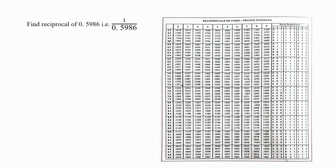Now let's consider one more example. Find the reciprocal of 0.5986, that is 1 divided by 0.5986. For use of the reciprocal table, I have to convert the given number into standard form. So I write it as 1 divided by 5.973 into 10 raised to minus 1. To verify the conversion is correct, I multiply the given number by 10 raised to minus 1 — that should give me 0.5973.